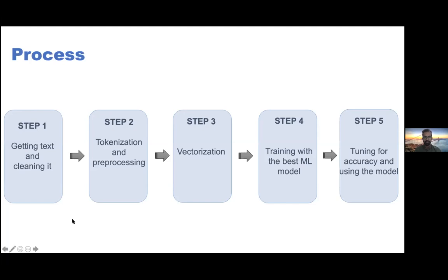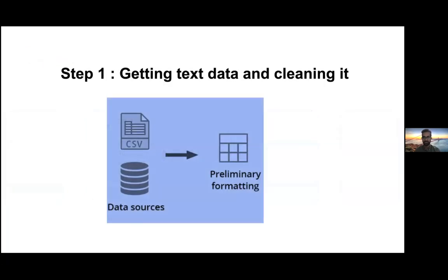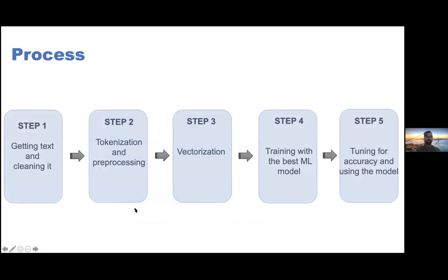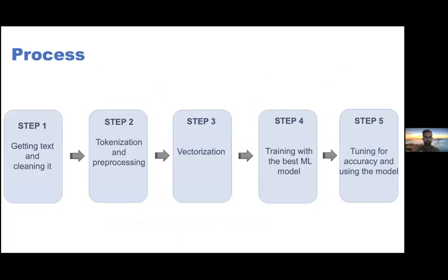Getting quality data is probably the most important aspect of machine learning. I've seen a lot of students directly building a machine learning model as soon as they get the data, without focusing on data quality. That's why the first steps are mainly about bringing in the importance of data cleaning and how to get the data in the best format before feeding it to the machine learning model. Once we have cleaned it, the next step is tokenization and preprocessing, and step three is vectorization.